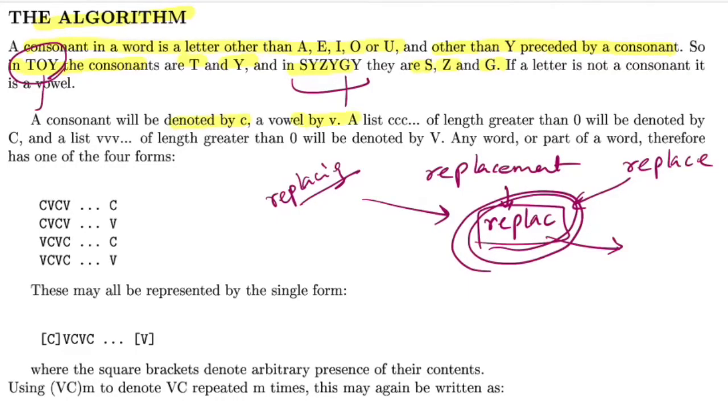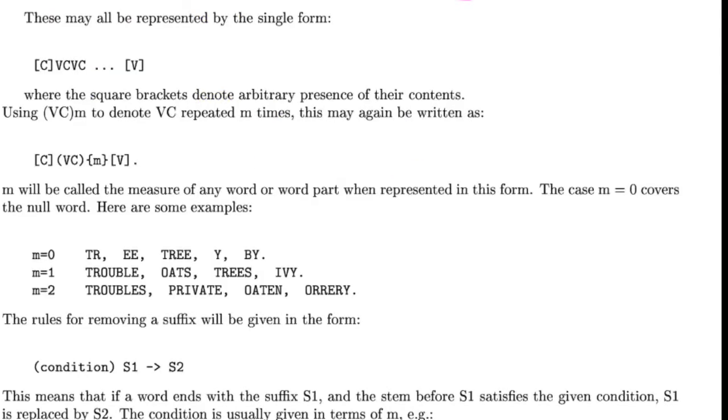They denote consonant by C, vowel by V. They define any word to be occurring in this format: you would have zero or more C's occurring consecutively, followed by a combination of V and C repeating M number of times, then followed by a sequence of V's zero or more times. You can think of this as a regular expression.